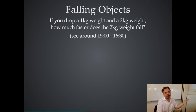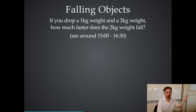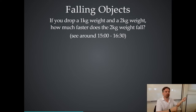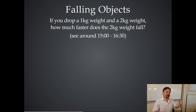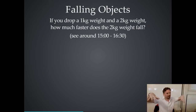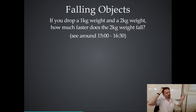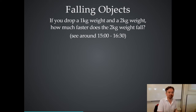That's counterintuitive until you get taught it. The claim is that until Galileo, people did think heavy objects fell faster than light ones — until he famously did the experiment and allegedly went to the Leaning Tower of Pisa and dropped two things. It's probably a slightly made-up story, but it illustrates the idea.